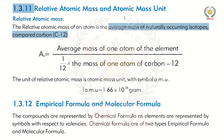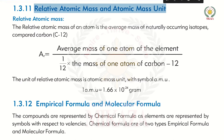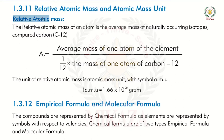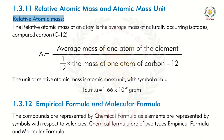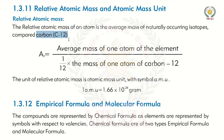Our next topic is Relative Atomic Mass and Atomic Mass Unit. Relative Atomic Mass of an atom is the average mass of naturally occurring isotopes compared to carbon C12. There are three types of carbon: C12, C13, and C14.